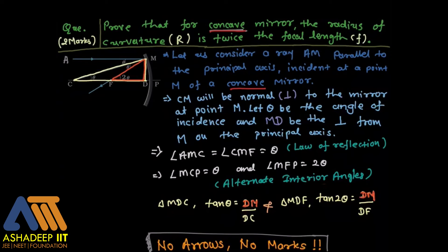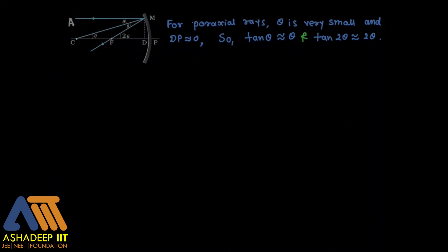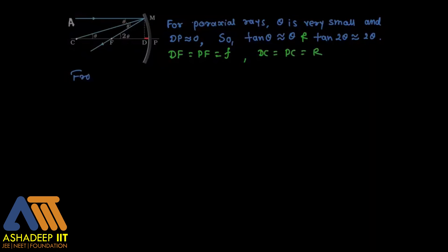For paraxial rays, theta is nearly equal to zero, so DP is nearly zero. Using trigonometric approximations: tan theta ≈ theta and tan 2 theta ≈ 2 theta. Also, DF equals PF equals f (focal length) and DC equals PC equals R (radius of curvature).